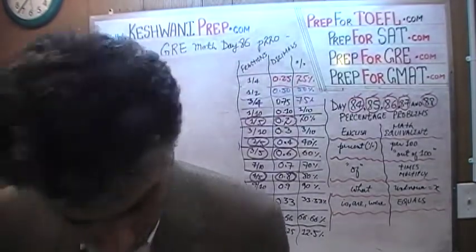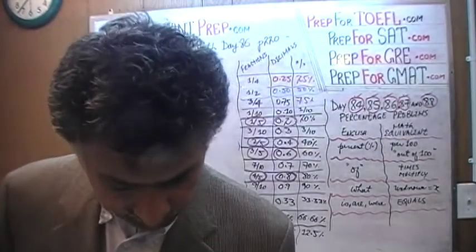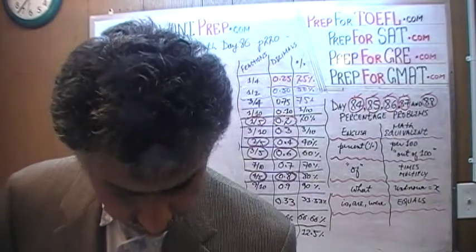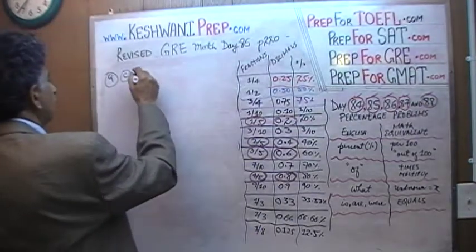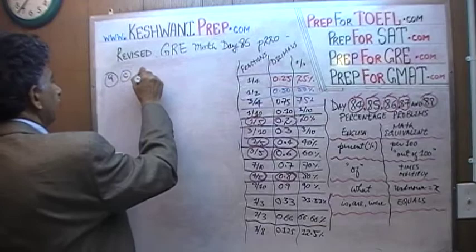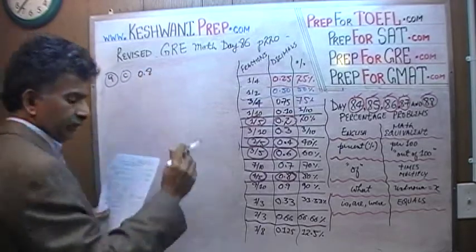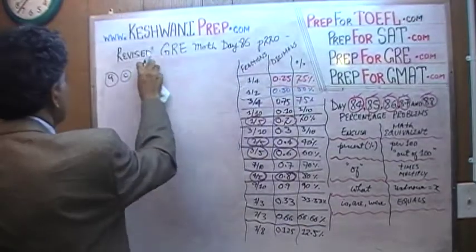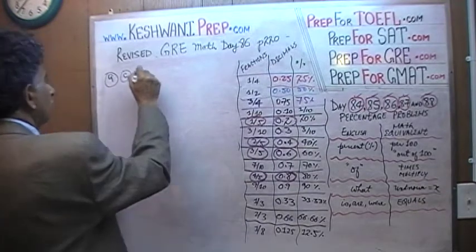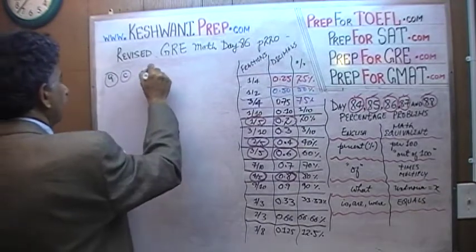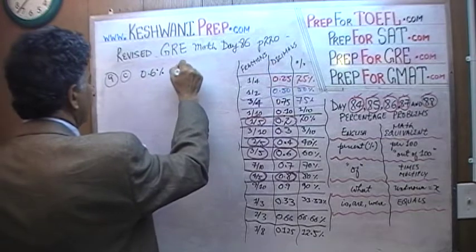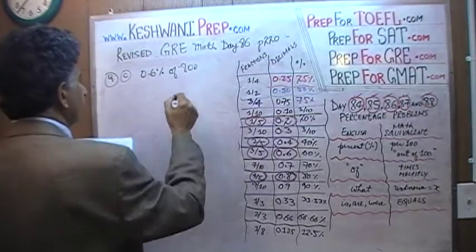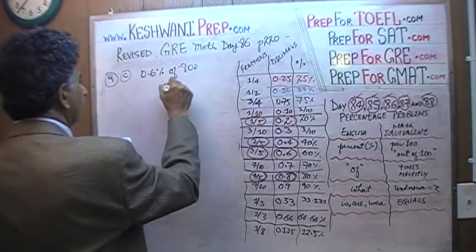Here is a chart of equivalent fractions, decimals, and percentages — our dictionary. I am not going to go over everything again because we have already done it twice. I discussed it at length on day 84 and briefly on day 85. Today is day 86. Let's get going — enough talk. Problem 9C says: 0.6% of 800 is what?